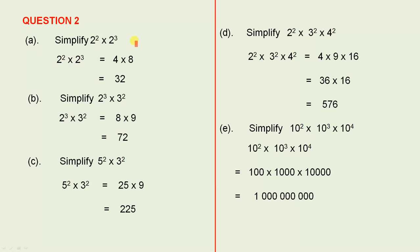Question 2. Simplify 2 squared times 2 cubed. So 2 squared times 2 cubed. 2 squared is 2 times 2, that gives us 4. 2 cubed is 2 times 2 times 2, that gives us 8.